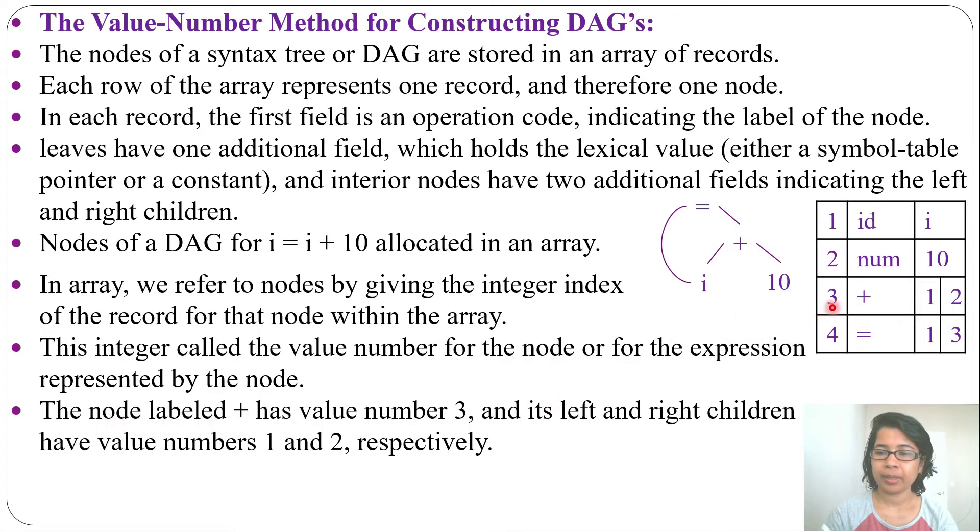You can mark the node labeled plus. Here value number is 3. And in left child, we are writing 1 rather than i or id. We are writing 1, means we are referring the value number inside the array. And at right child, we are writing 2, that is the value number for 10. So inside the array, we are identifying one node by just the value number.